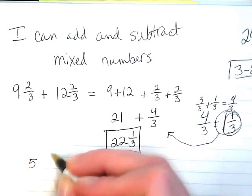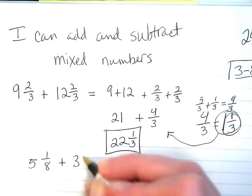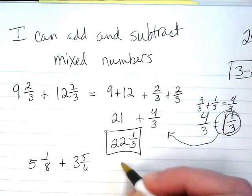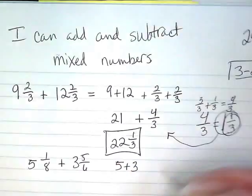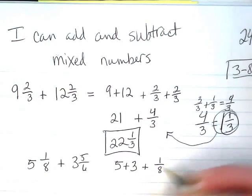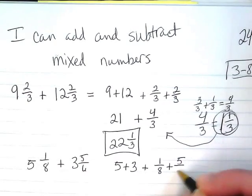Another example would be 5 and 1 eighth plus 3 and 5 sixths. Again, we can just move the whole numbers over, 5 plus 3, and then we're going to move the fractions over separately. This is where we're using our commutative property again. We can move numbers with addition.